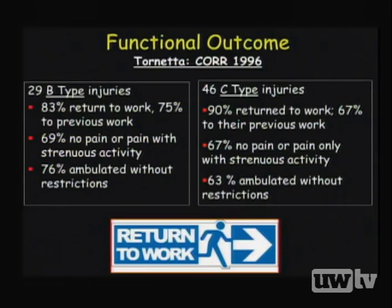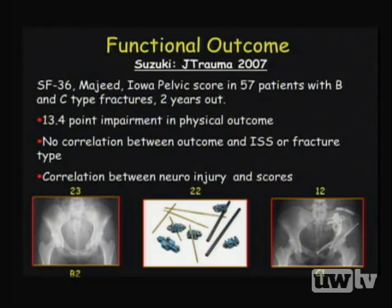Suzuki studied 57 patients with unstable ring injuries at two years, including 23 conservatively managed, 22 with anterior fixation only, and 12 with anterior and posterior fixation. He found no correlation between outcomes and injury severity scores or fracture type, but did find a correlation between neurological injury and outcome scores.